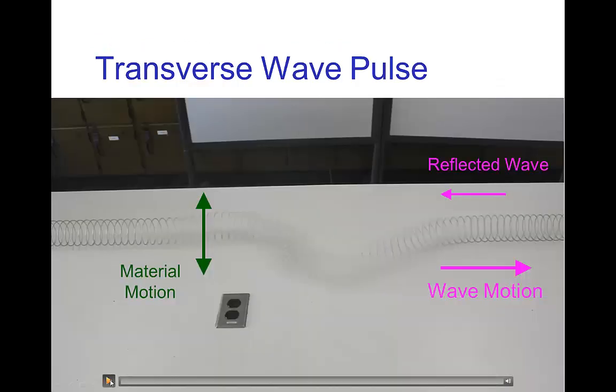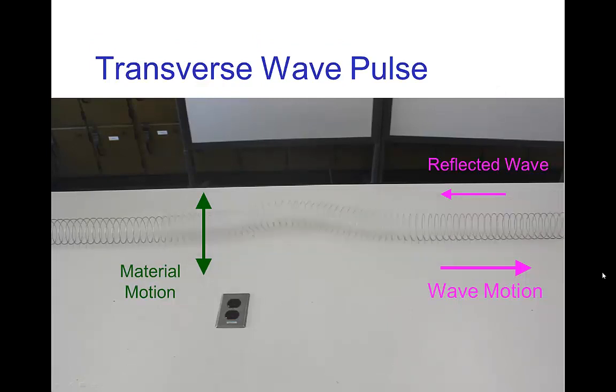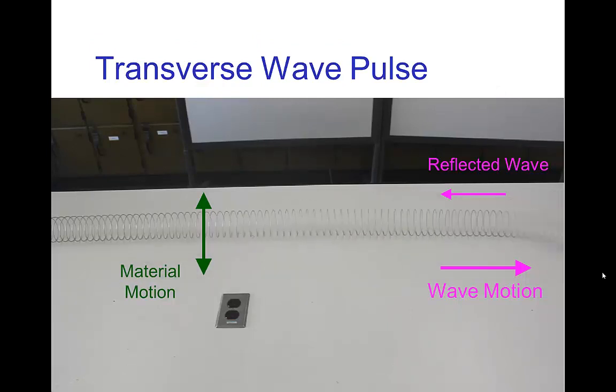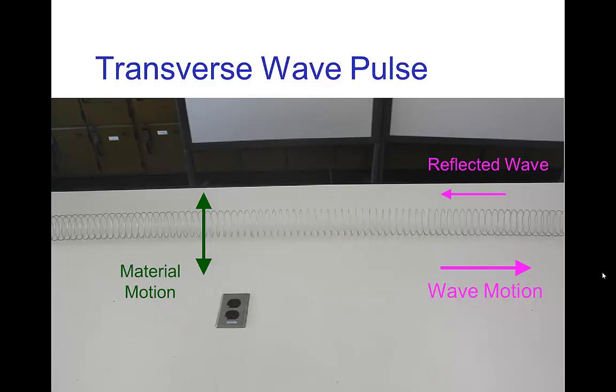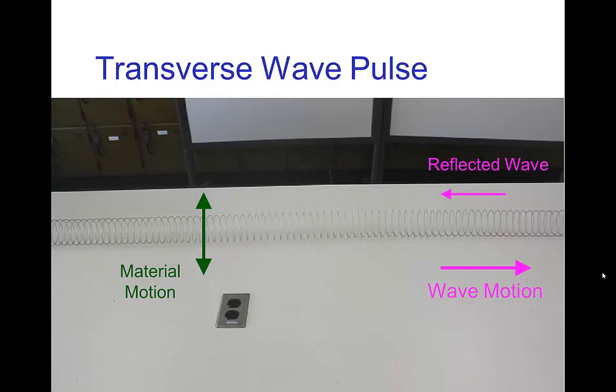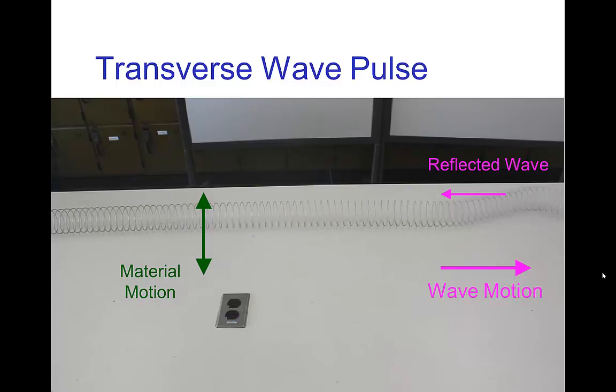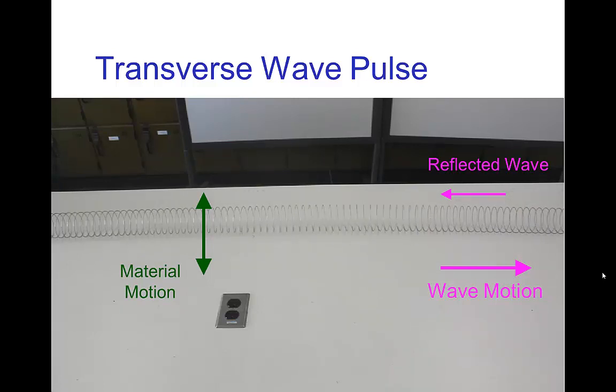Here's a quick video that shows transverse waves traveling on a slinky. You see that the motion of the material is in that video up and down, and the wave is traveling first to the right and then reflects and travels to the left. The wave motion is perpendicular to the material motion.